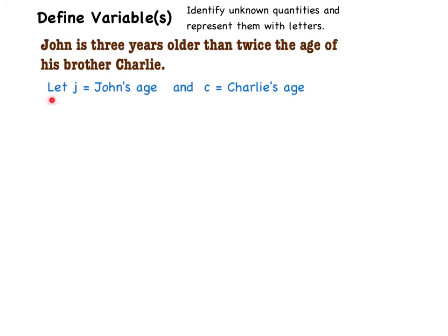So I'm going to let j be John's age and c be Charlie's age. The step right here is the actual defining of the variables. We're coming up with letters that are going to represent things that we don't know.